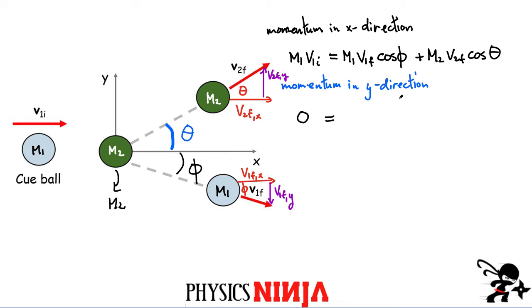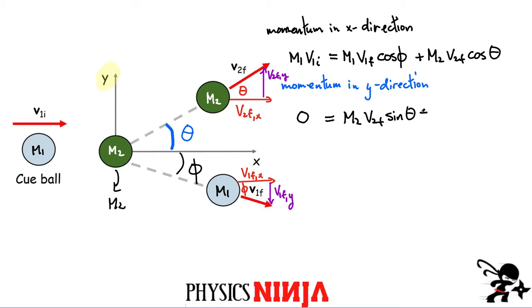For the y-direction equation, on the right-hand side: mass m2 has a vertical velocity component written as v2f times sine of theta, which is positive because it points upward. Then we have v1 final pointing downward in the y-direction, so we introduce a negative sign: minus m1 times v1 final times sine of phi. That's the y-momentum conservation equation.